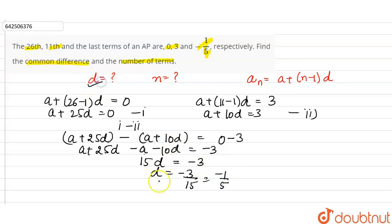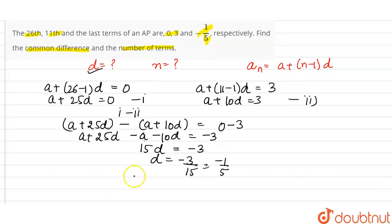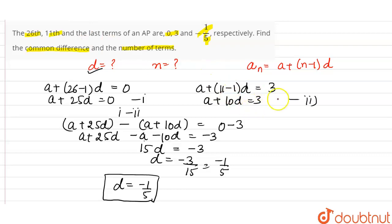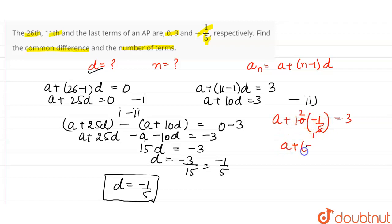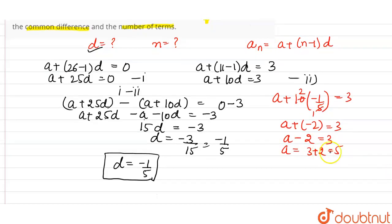So the common difference is -1/5. Now let's substitute the value of d into equation 2 to find a. So a + 10 × (-1/5) = 3, which gives a + (-2) = 3, so a - 2 = 3, therefore a = 5.